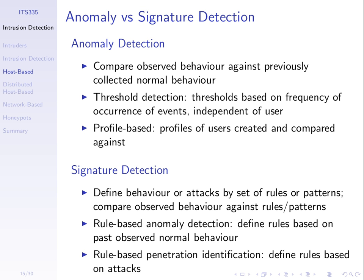If we know the behaviour of the normal user — say we study their behaviour over one month — we can understand what they normally do: what files they access, what programs they execute, when they execute them, when they log in, how often they log in per day or per week, and for how long they're logged in. If we understand the characteristics of normal behaviour, when something happens we compare it to that normal behaviour and see if it's outside — that is, it's an anomaly.